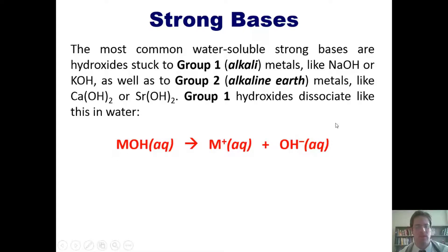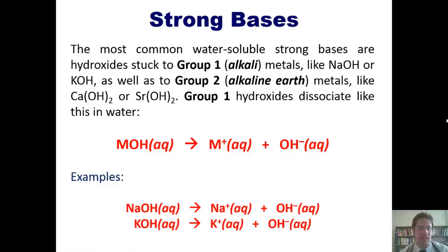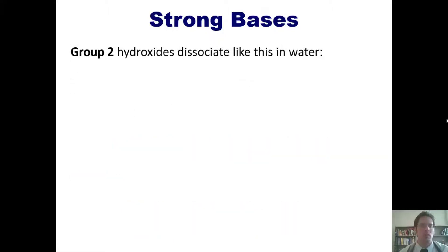Group 1 hydroxides dissociate like this in water, where M is my group 1 metal. It releases hydroxide in water and forms a metal cation. Examples include sodium hydroxide and potassium hydroxide, as well as others that I'm not showing here.